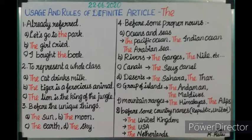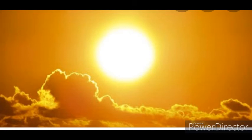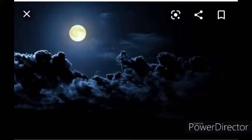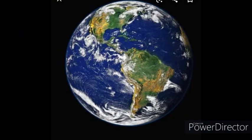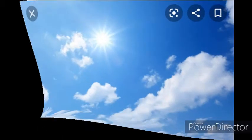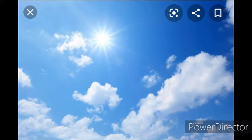Third rule: before unique things. Unique things are special — they are the only one of their kind in the world, with no substitute. For example: 'the sun' — there is only one sun in the sky. Similarly, 'the moon' — there is only one moon. And 'the earth,' 'the sky.' These are unique things, so we use the definite article 'the.'